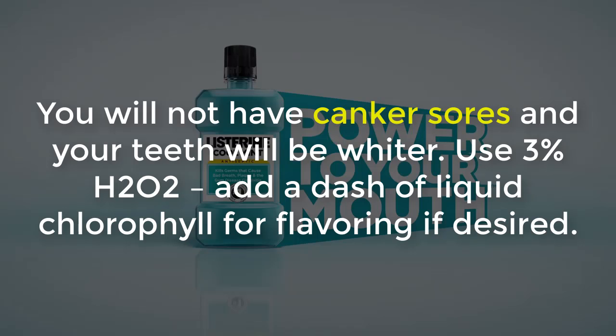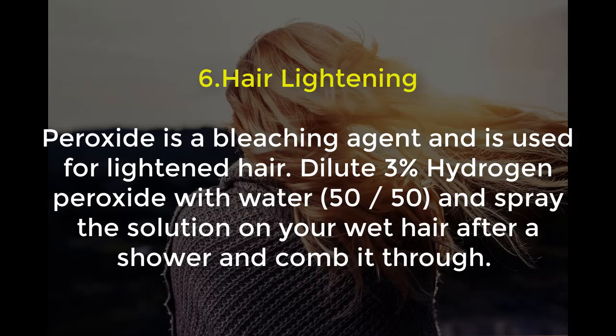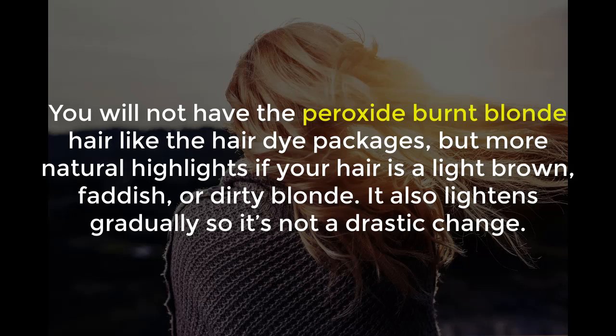You will have no canker sores and your teeth will be whitened. Use 3% H2O2, and add a dash of liquid chlorophyll for flavoring if desired. Number six: hair lightening. Peroxide is a bleaching agent and is used for lightening hair. Dilute 3% hydrogen peroxide with water 50/50 and spray the solution on your wet hair after a shower and comb it through. You will not have the peroxide burnt blonde look like with hair dye, but more natural highlights. If your hair is light brown, reddish, or dirty blonde, it also lightens gradually so it is not a drastic change.